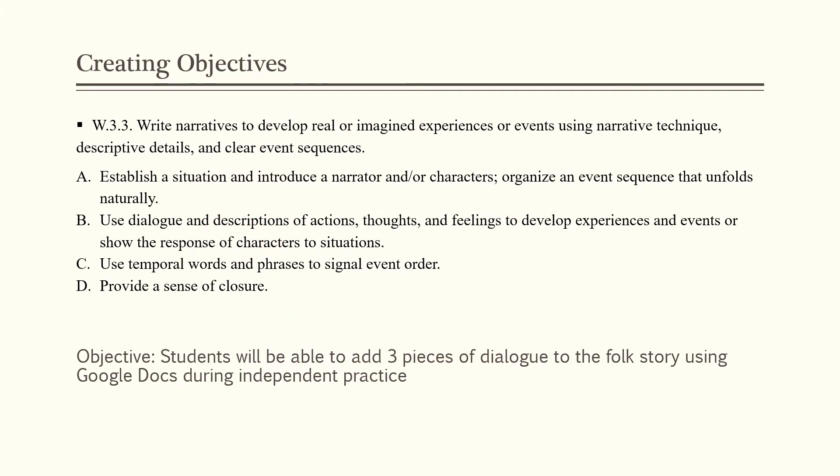Here's an example of how you would use the standards and break them down to create objectives. This is third grade W3.3, the narrative writing standard: write narratives to develop real or imagined experiences using narrative technique, descriptive details, and clear event sequences. Part A is to establish a situation and introduce a narrator or characters, and organize an event sequence that unfolds naturally. Part B is to use dialogue and descriptions of action, thoughts, and feelings. Part C is to use temporal words and phrases to signal event order. And Part D is to provide a sense of closure.